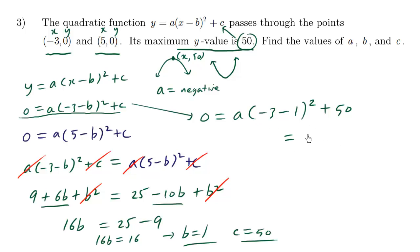Going to look at this equation here. Move the 50 over, so it becomes negative 50. And what we have here on the right hand side is negative 3 minus 1 is negative 4. Negative 4 squared is 16. So we have 16a. So a equals negative 50 over 16.